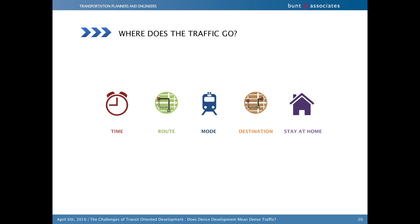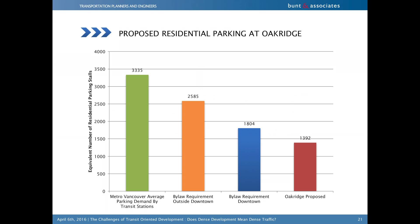Where does this traffic go when background traffic has to decrease to accommodate large development? It turns out it's got plenty of places to go. You could travel at a different time of day - planners especially remember this is a peak hour model, and there are lots of other hours in the day for traffic to spread. You could take a different route, change your mode to transit, bike or walk, change your destination, or maybe stay home and order groceries online.